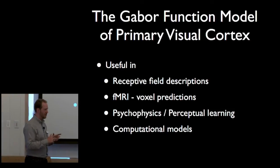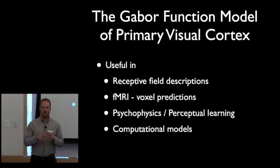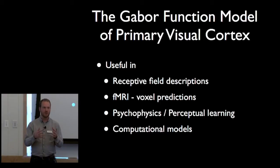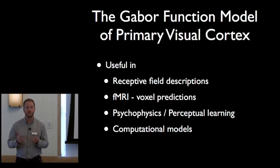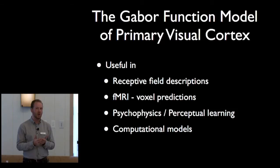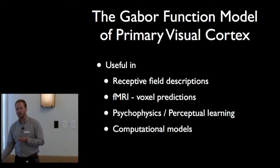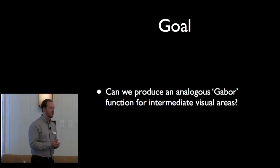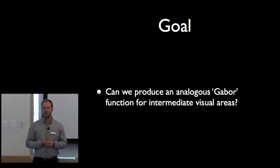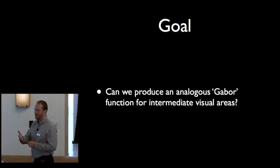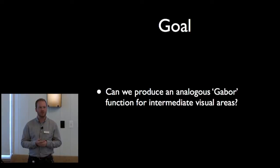This very simplistic model — where it's a low dimensional parameterization of the transform from pixels into some other representation — has had such incredible utility. It's very natural to ask: can we actually come up with a Gabor function for intermediate vision? Could we come up with some low dimensional function that explains in broad strokes what we might find in intermediate vision? That's what I'll try to present — some initial results we have in this direction.